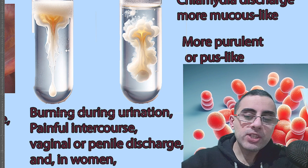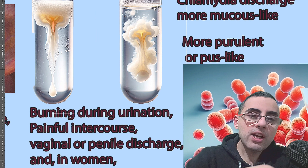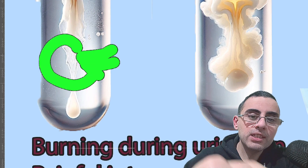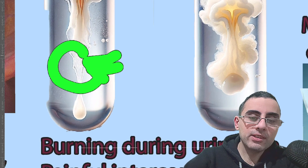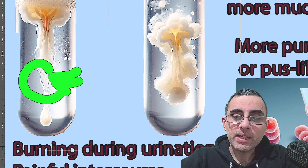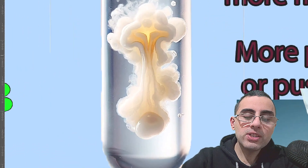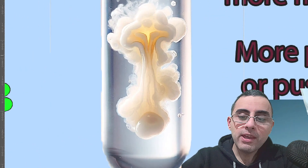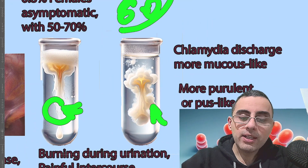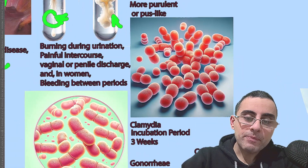Discharge can differ between the two infections. In chlamydia, the discharge is more clear and can resemble normal vaginal discharge, making it difficult to diagnose because women may mistakenly perceive it as normal. In gonorrhea, the discharge is more purulent, cloudy, whitish, or greenish, making it more characteristic and easier to identify.